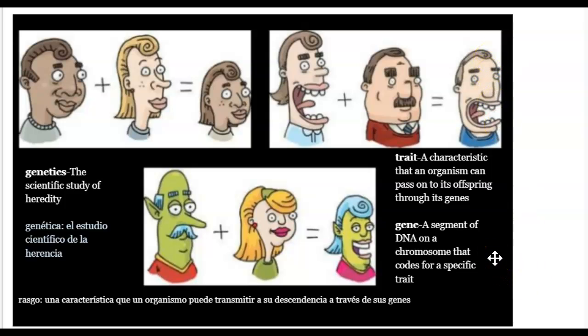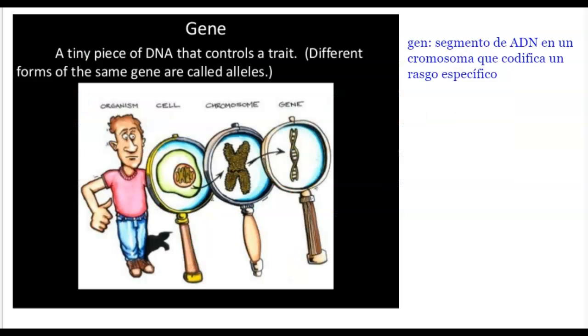Gene. A segment of DNA on a chromosome that codes for a specific trait. For example, this father has blue hair. He has a gene for blue hair. His offspring or child has blue hair. For example, a gene is a tiny piece of DNA that controls a trait.